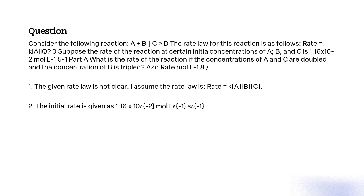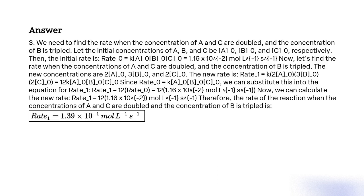The initial rate is given as 1.16 × 10⁻² mol L⁻¹ s⁻¹. We need to find the rate when the concentrations of A and C are doubled and the concentration of B is tripled. Let the initial concentrations of A, B, and C be A0, B0, and C0 respectively.